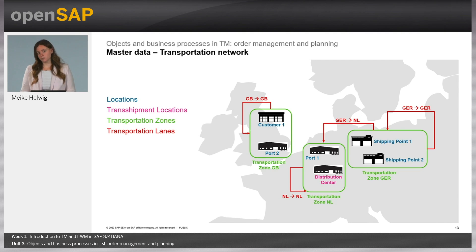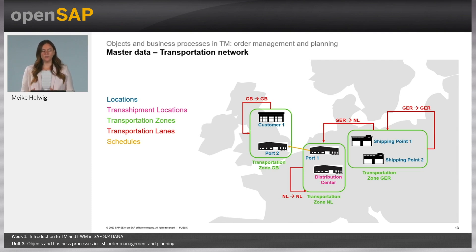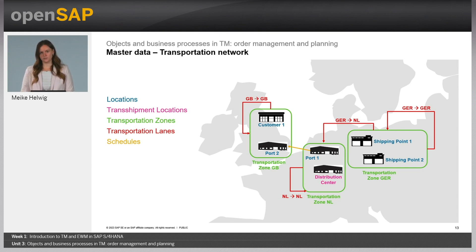On top of the lanes, which are mainly for road transport, we also have so-called schedules. Thinking about air or ocean transport, we have connections between a port and a port. Normally you have here a schedule from a carrier with voyages, and you have to book capacity on this voyage. It's not possible to do this without this booking. Therefore, we have this schedule in SAP Transportation Management — which is also not available in eLeTra, we have this only in TM — which enables you to have a schedule like a bus schedule, to reflect this in the SAP Transportation Management system and have a connection between a port and another port, or also between an airport and another airport.